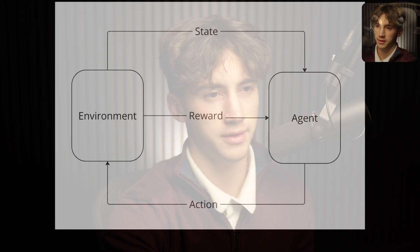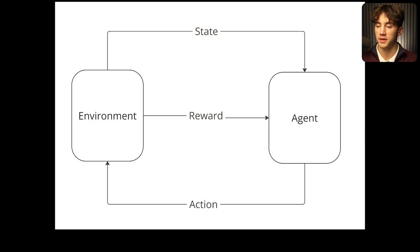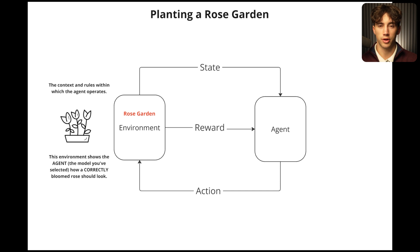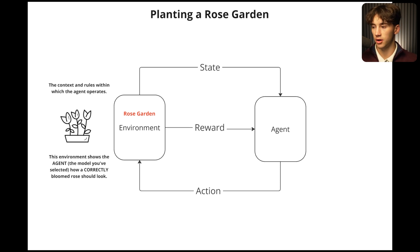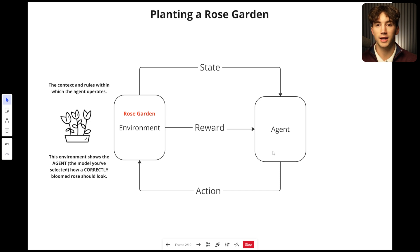Now that you've watched the video and understand a little more about what's going on, let me share an analogy to help you understand the more general idea of reinforcement fine-tuning. We have variables like environment, action, reward, agent, and state. Let's look at planting a rose garden. The rose garden is the environment — and in AI terms, the environment is things like the actual dataset, the JSON-L format file that was uploaded. The environment shows the agent how a correct output should look, just as the rose garden shows the gardener how a correctly bloomed rose should look in order to understand the desired state.